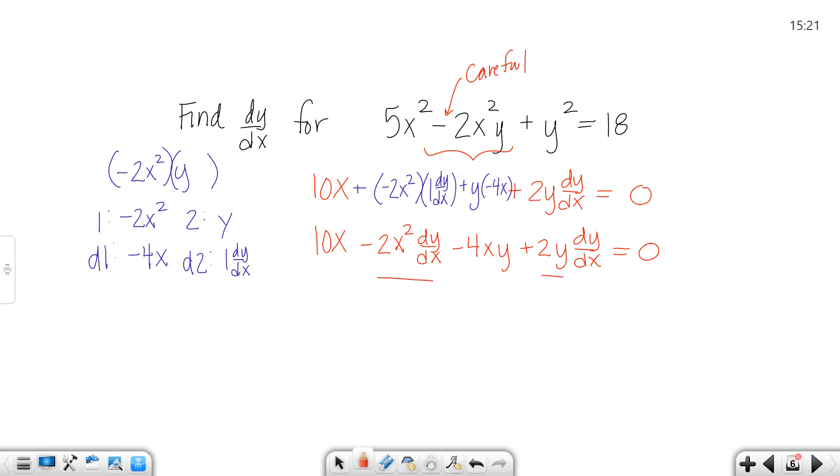Keep the dy/dx's on this side, move everything else over. So the 10x is going to become negative. And the 4xy is going to become positive.